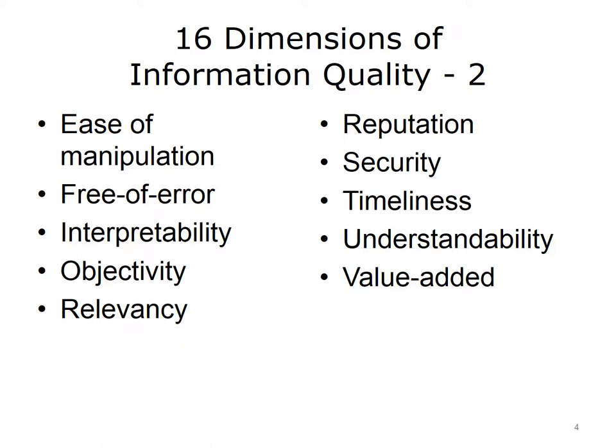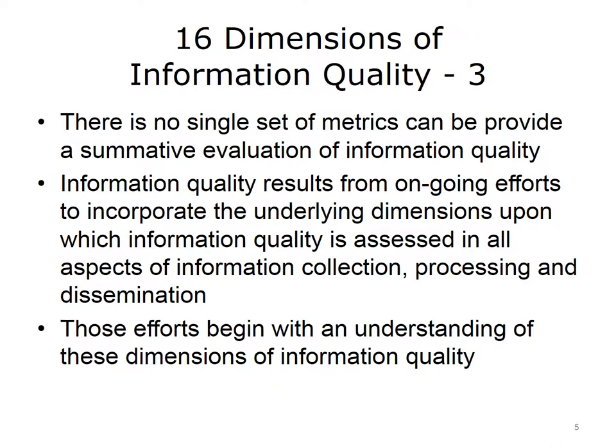The last three measures of information quality are: Timeliness — the extent to which data is sufficiently up-to-date for the task at hand, a highly subjective dimension determined by the specific use of the information. Understandability — the extent to which data is easily comprehended. Value-added — the extent to which data is beneficial and provides advantages from its use. Experience suggests there is no single set of metrics to easily provide a summative evaluation of information quality; rather, quality results from ongoing efforts to incorporate these dimensions in all aspects of information collection, processing, and dissemination.